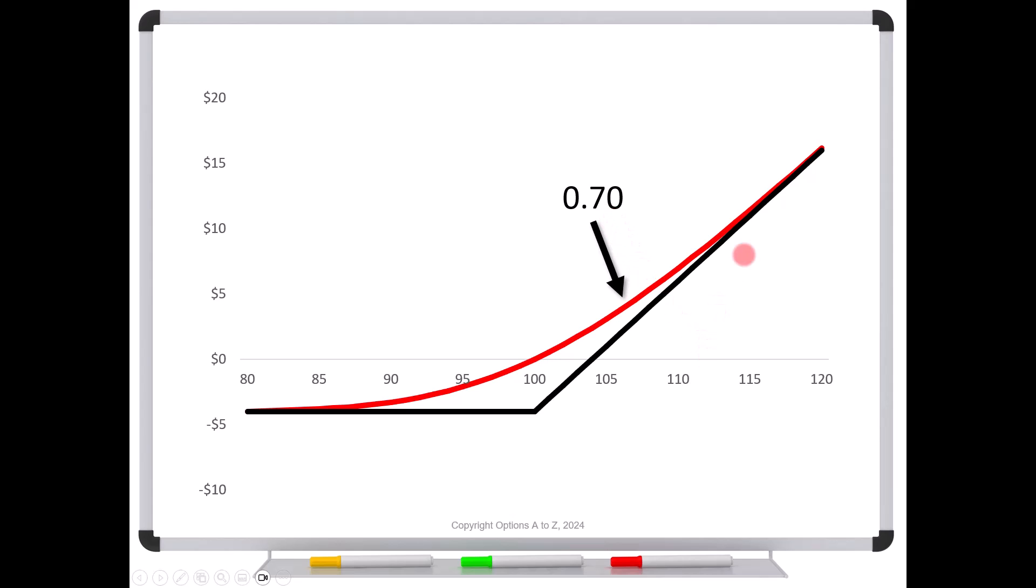And the only time that it's going to get to delta one is way up here. So maybe the stock has to be at 120. And now we can see that the delta has hit one. And you can see that visually because the red line is hiding behind the black line. You can't tell them apart. In other words, the call is trading just like stock. It's trading at parity. And so it's got a delta of one. So it seems like that red line should never get steeper than one.